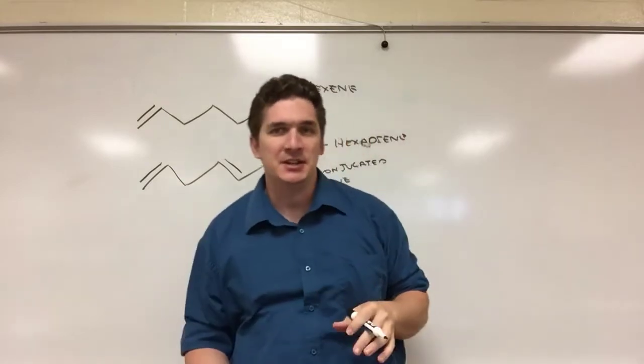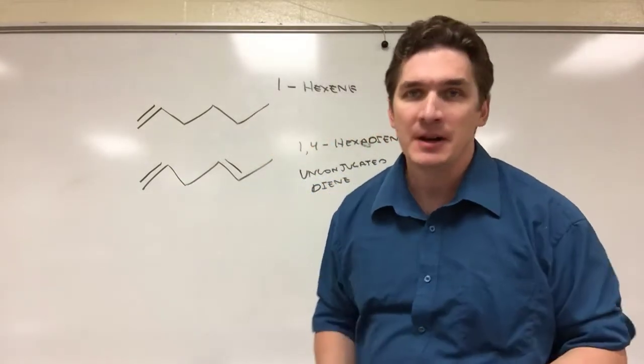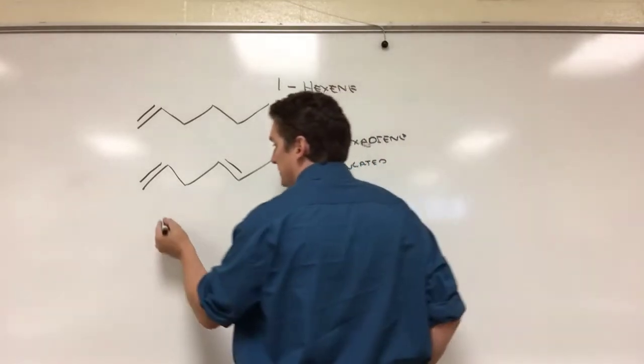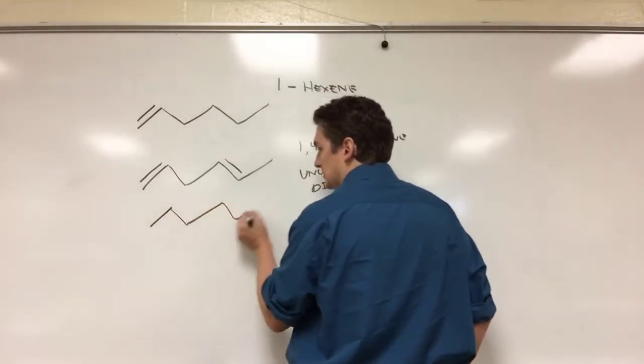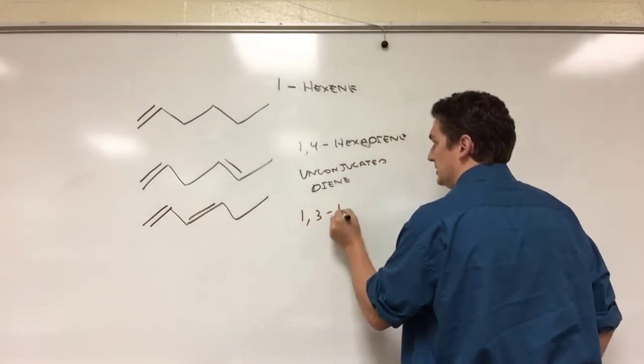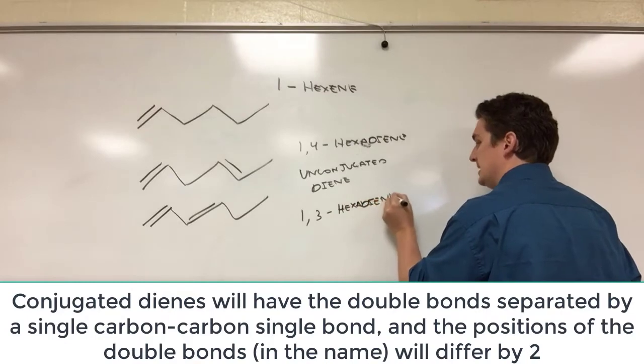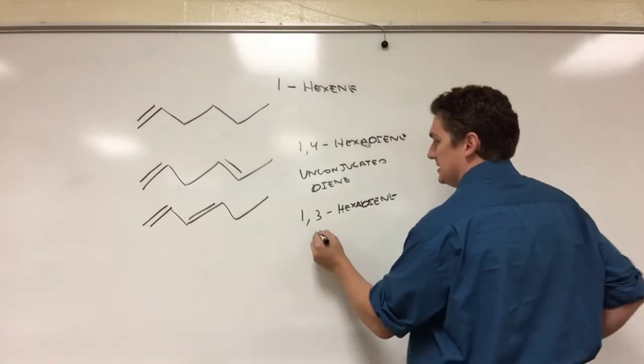So what do we mean by unconjugated? Well, a conjugated diene is where the double bonds are separated by a single carbon single bond. So if we redraw hexene here, our 1,3-hexadiene is what's called a conjugated diene.